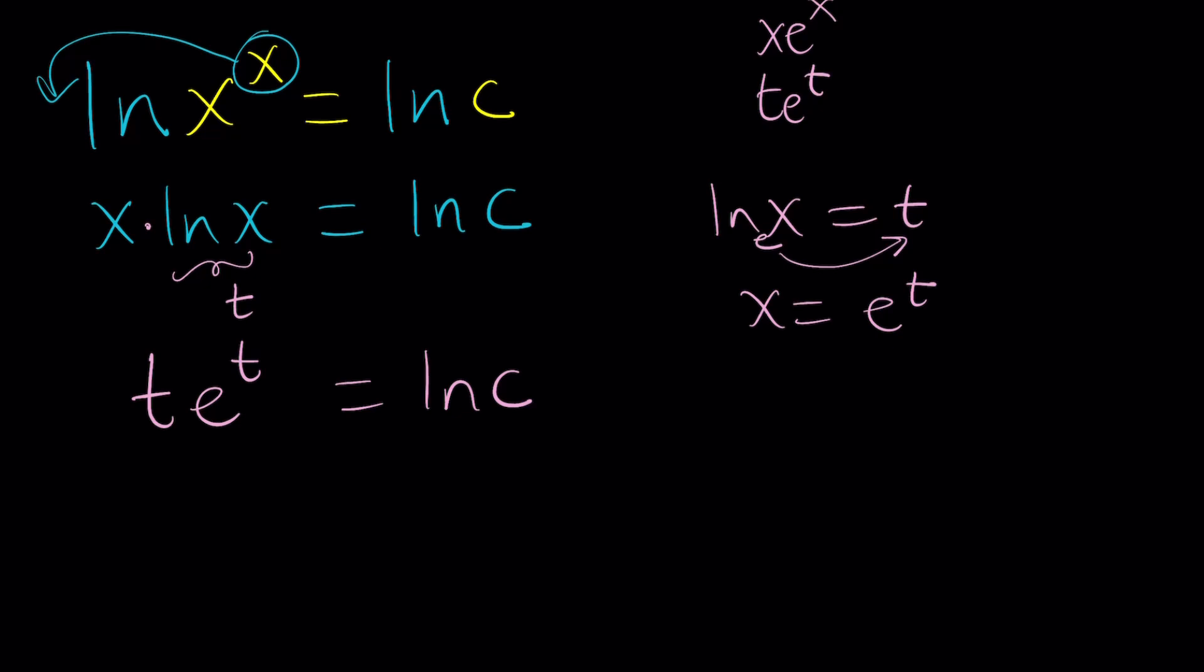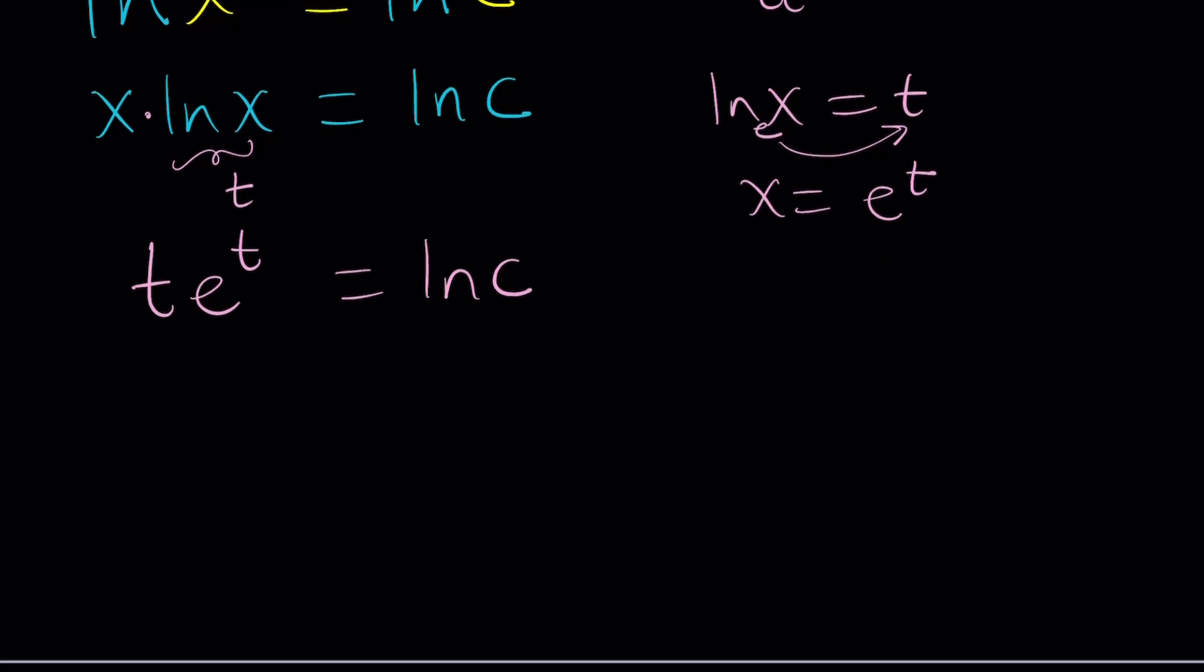Now we're going to go ahead and Lambert both sides. That's going to give us W of this equals W of that and as you know Lambert's W of t e to the t is equal to t so t is just going to be W of ln c.